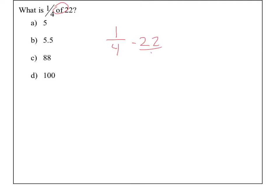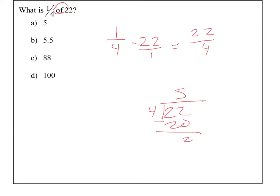So when I go ahead and do this multiplication, top times top, bottom times bottom, it gives me 22 over 4. And as we go ahead and jump through that division, 22 divided by 4 goes in 5 times, remainder 2, decimal, bring down the 0, goes in exactly 5 times — 5.5. One-fourth of 22 is 5.5.